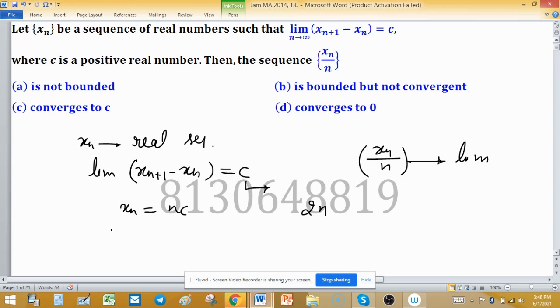Then XN plus 1 minus XN will be C, and the limit of a constant sequence is the same constant. So the limit of this one is C. This sequence XN equal to NC satisfies the given hypothesis.